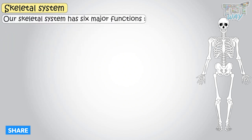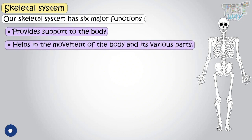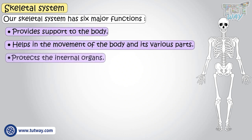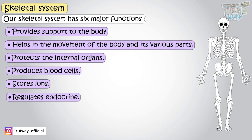Our skeletal system has six major functions: it provides support, helps in movement, protects internal organs, produces blood cells, stores ions, and regulates our endocrine system.